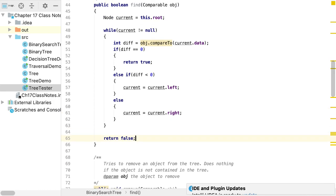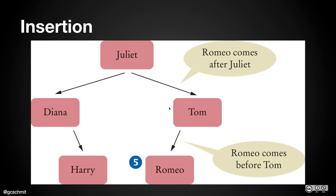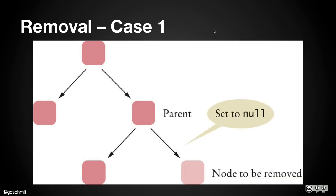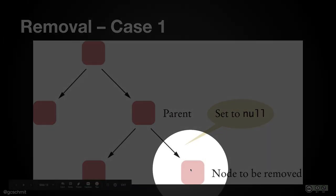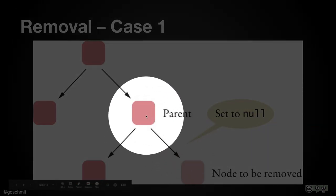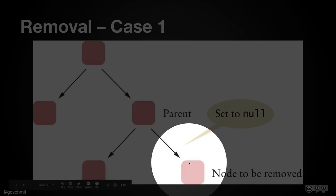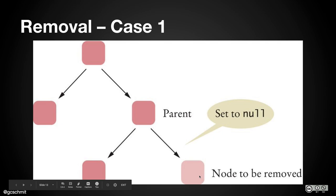Here's where things start to get complicated: removing an element from the tree. There are several different cases. Case one: the node to be removed has no children. We simply need to know who its parent is and whether it's the left or right child. In this case we set the parent's right reference to null, and we're done.